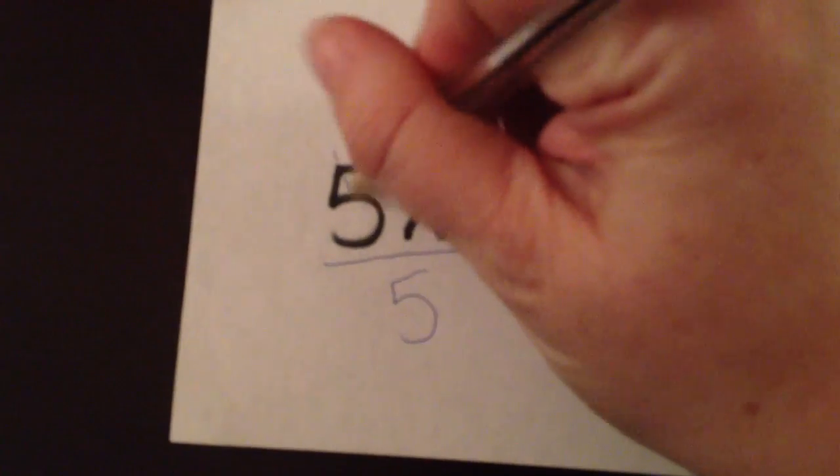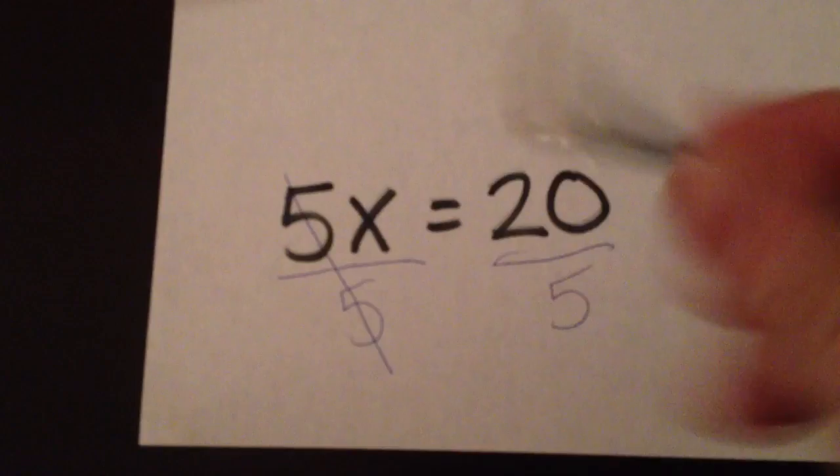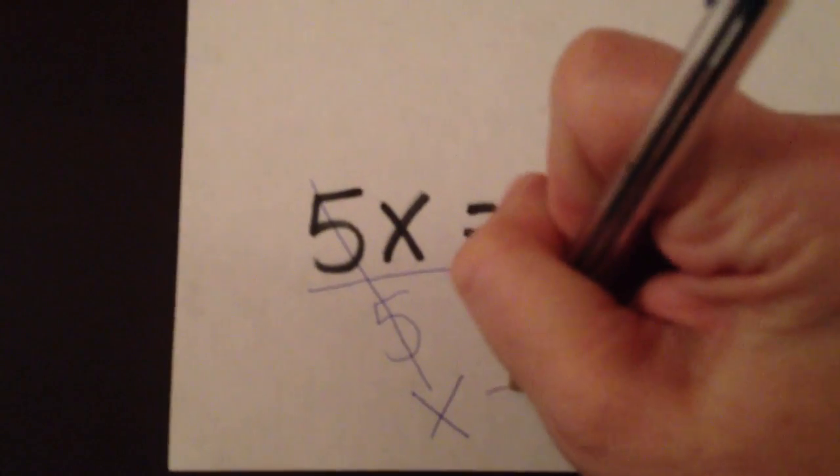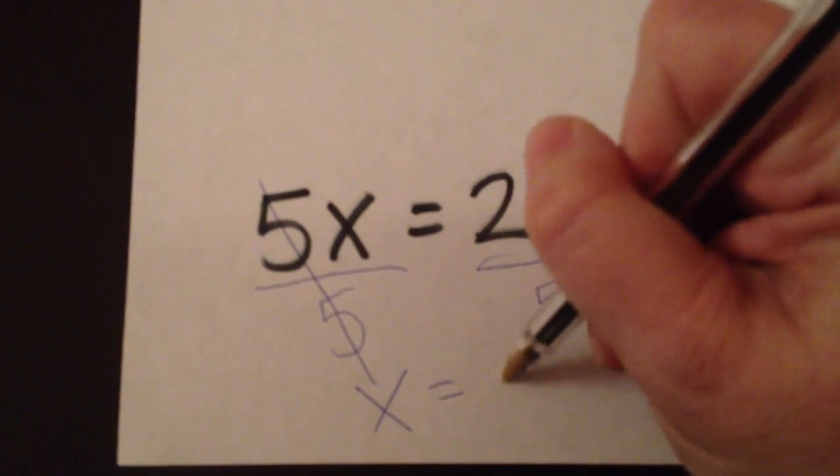The 5's cancel out because multiply by 5 and divide by 5 are opposites. So we have x on the left side equals 20 divided by 5, which is 4.